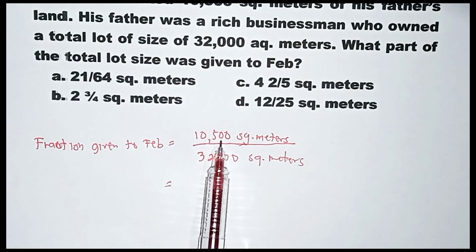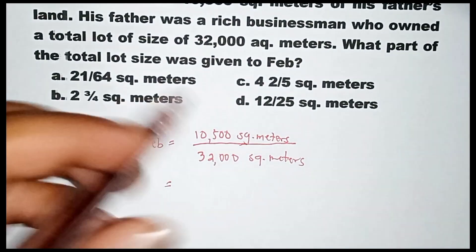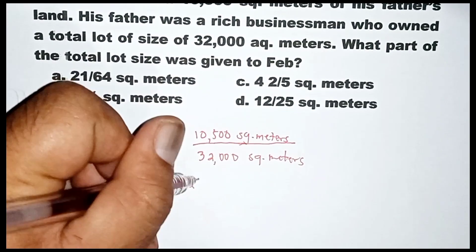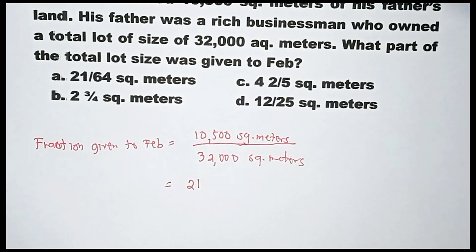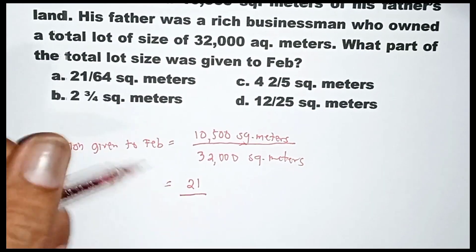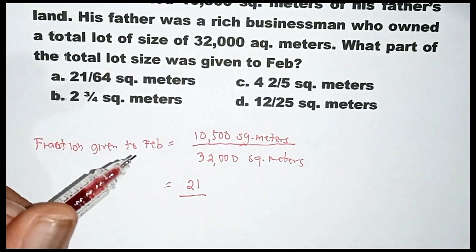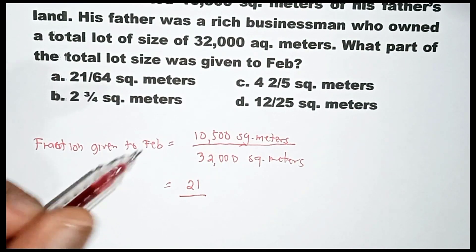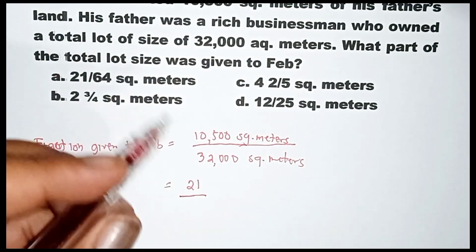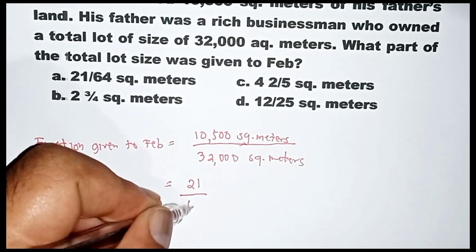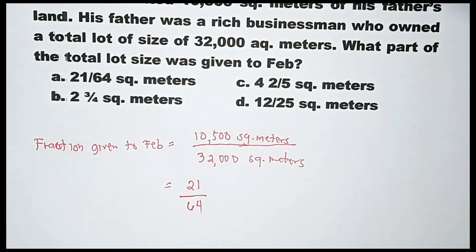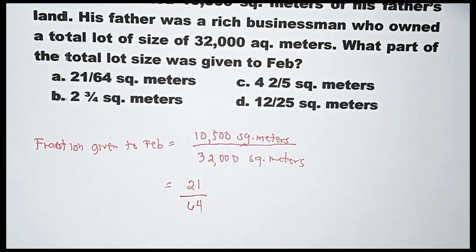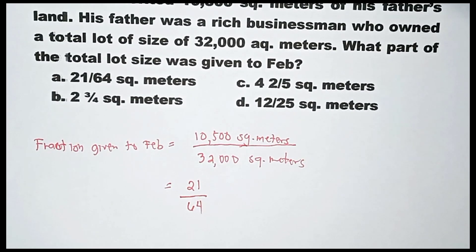Okay, greatest common factor nilang dalawa. So pag di-divide ko itong 10,500 by 500, meron akong 21. Okay, while this one, 32,000, di-divide ko sa 500, meron syang sagot na 64. Okay, then yun na yun, yung sagot natin.